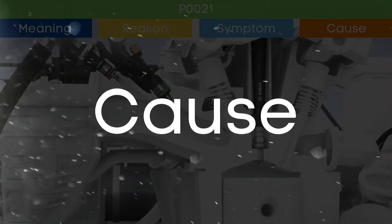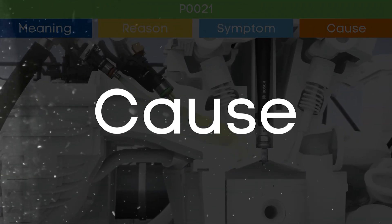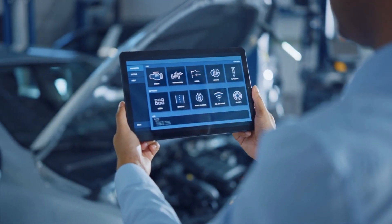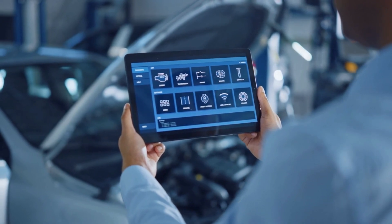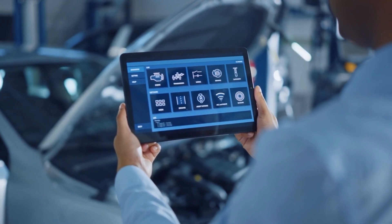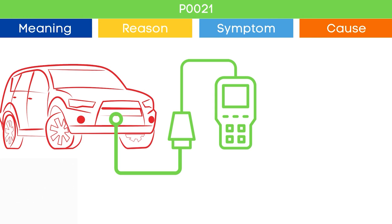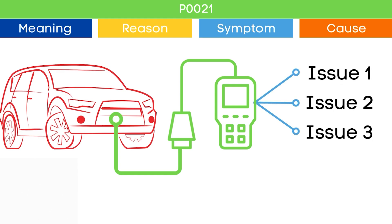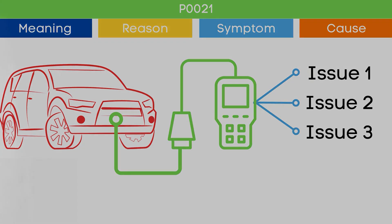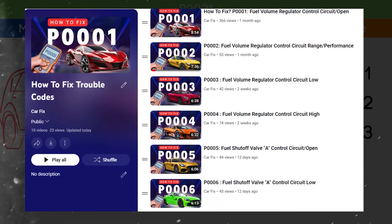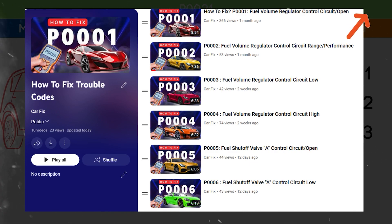Now let's delve into the causes of P0021. The P0021 code may be triggered due to several causes. To ensure the root cause, check other activated OBD-II codes, as they may indicate malfunctions in other engine management system components. You can find our playlist on the meaning and causes of each OBD-II code — link in the corner.